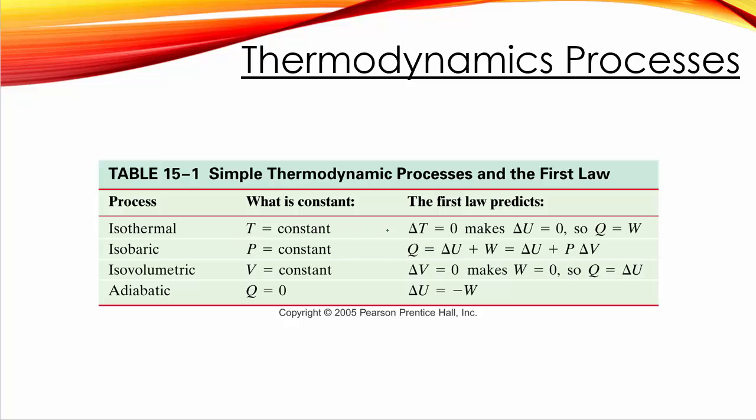So isothermal, constant temperature. Delta T is zero. So delta U is zero. So Q equals W. P is constant. So all we really change is we define W as P delta V. Isovolumetric, that means that delta V is zero, which makes work zero. So Q is equal to delta U. And adiabatic, by definition, Q is equal to zero. So we get delta U equals W.